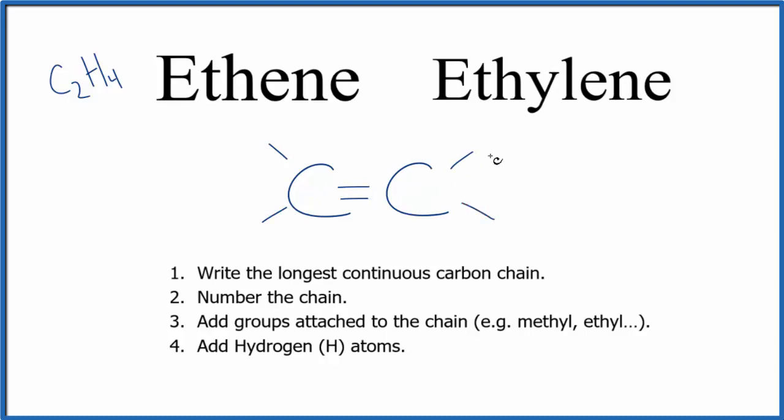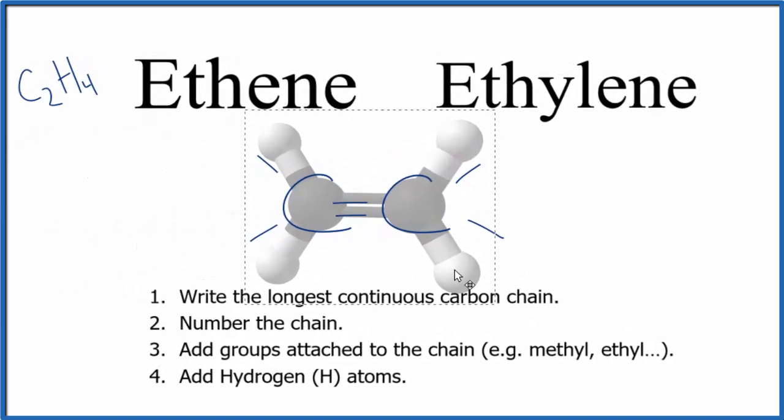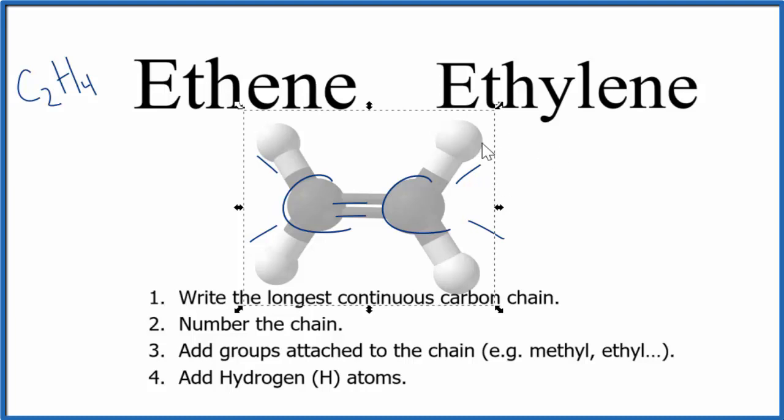So this is the structure for ethene, also called ethylene. And we would have hydrogens here on each one of these bonds, although we often don't show that. If you wanted to look at a molecular model for ethene, that would look like this. The blacks are the carbon, and then the whites are the hydrogen. So you can see the double bond there and you can see the hydrogens.